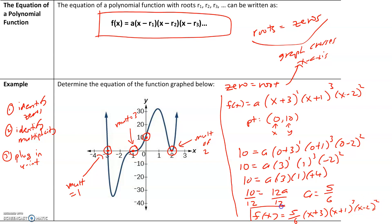We'll do more examples in class. The key things to remember: when the graph crosses the x-axis, it's multiplicity 1; a snaky S-shape is multiplicity 3; a U-shape bounce is multiplicity 2. It's always x minus the zero value — so x minus negative three gives x plus three, x minus negative one gives x plus one, and x minus two stays as x minus two.